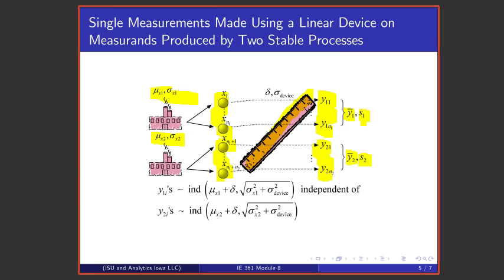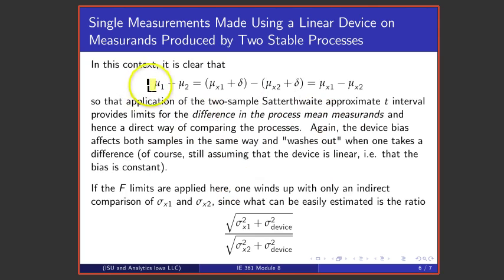And the thing to notice about this setup is that the first data generating mechanism produces data with mean that is the first process mean plus device bias and the second data generating mechanism produces data with mean the second process mean plus again the device bias so that one has two different means that differ by the difference between the two process means. That implies that if I take mean number one subtract mean number two I wind up with the difference in the two process means.